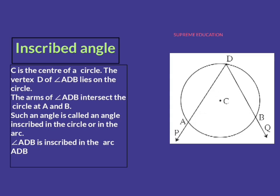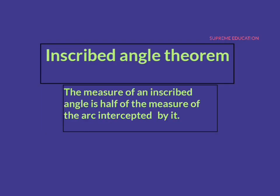Now we'll move towards the inscribed angle theorem, which gives us the relation between the inscribed angle and the arc intercepted by it. The statement of this theorem is: the measure of an inscribed angle is half of the measure of the arc intercepted by it.